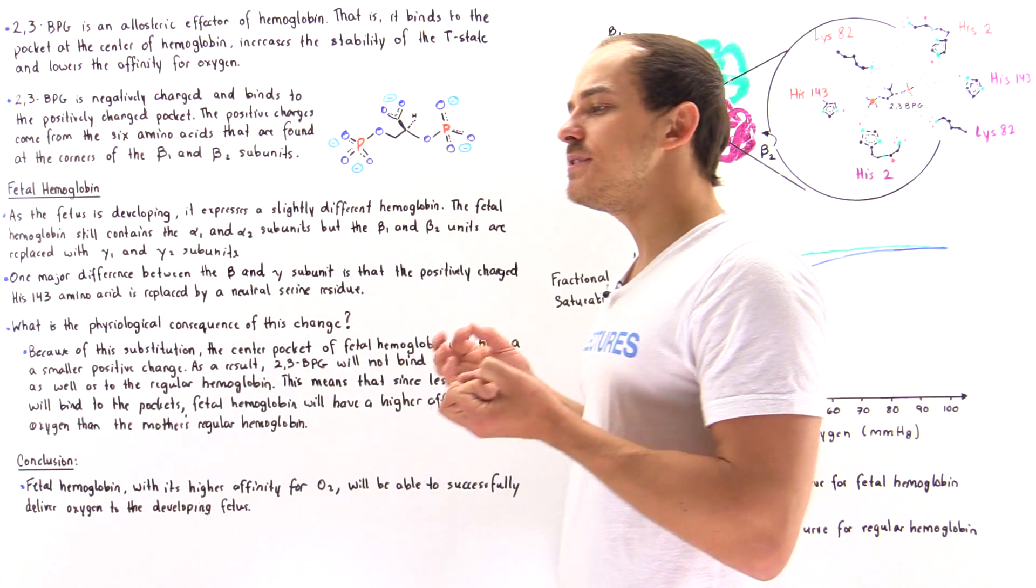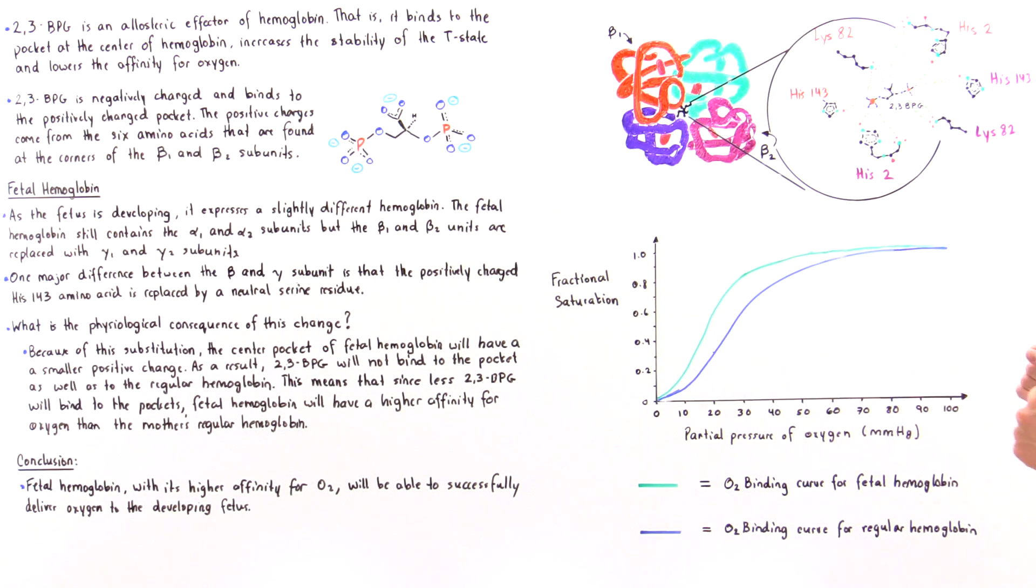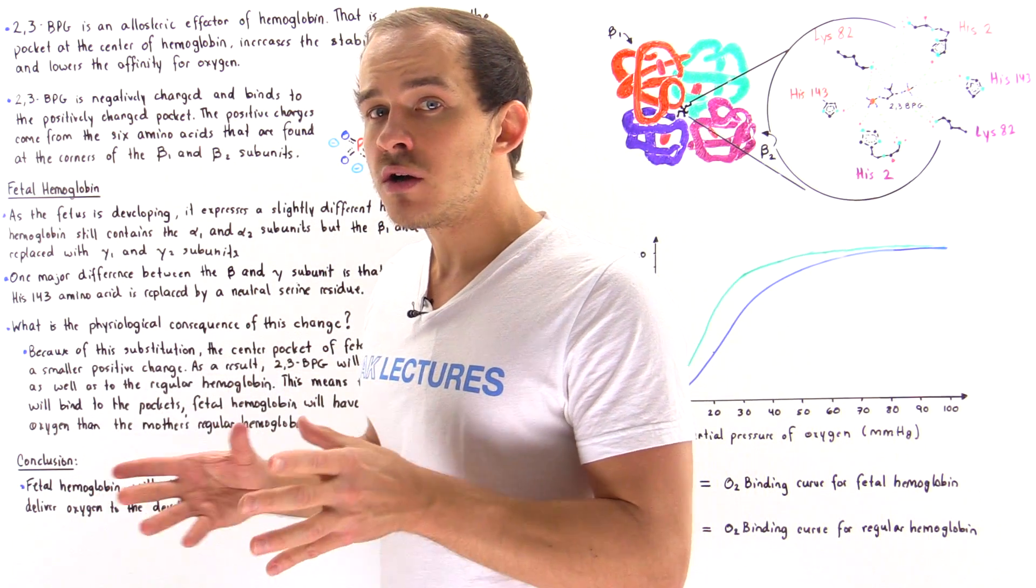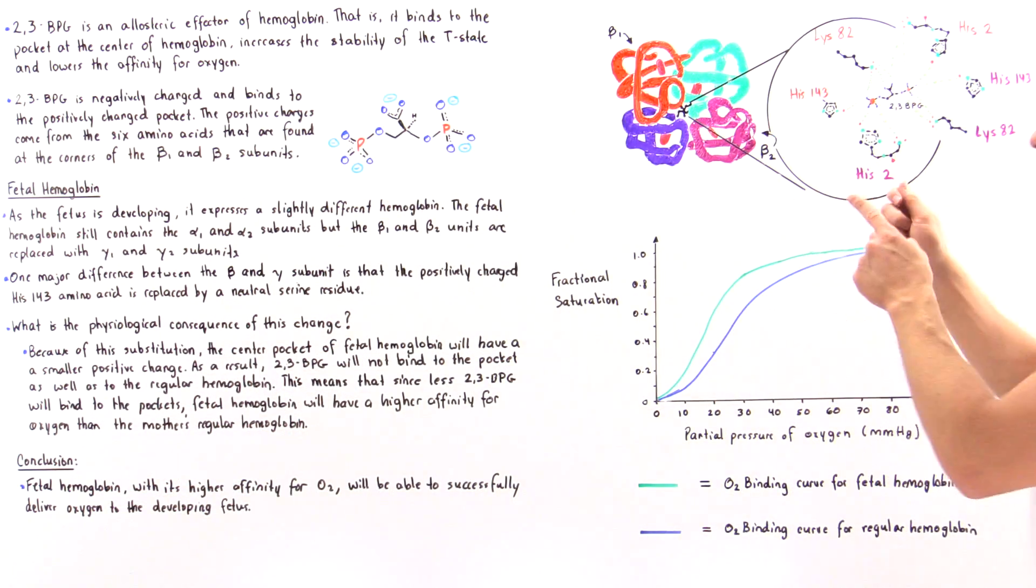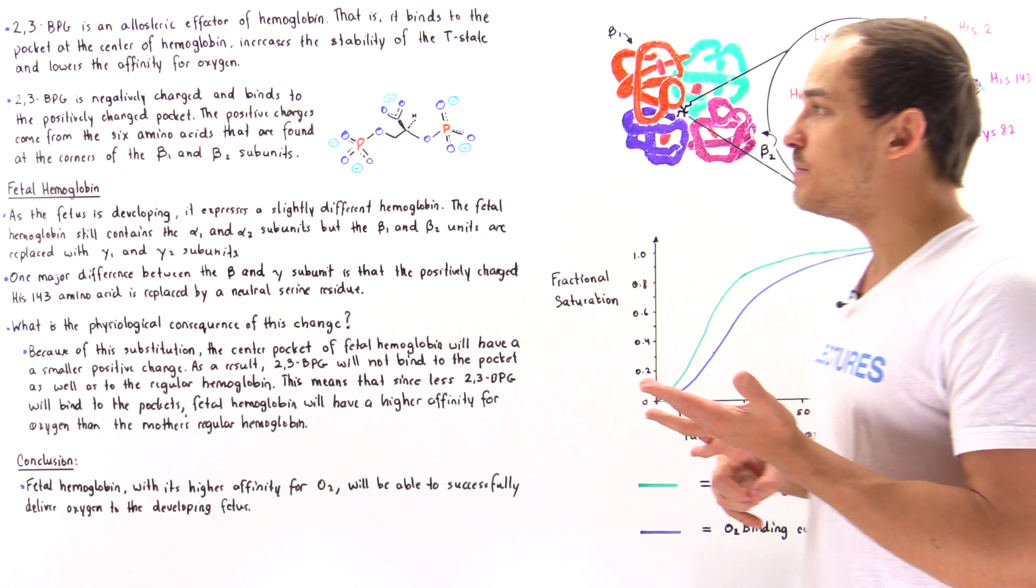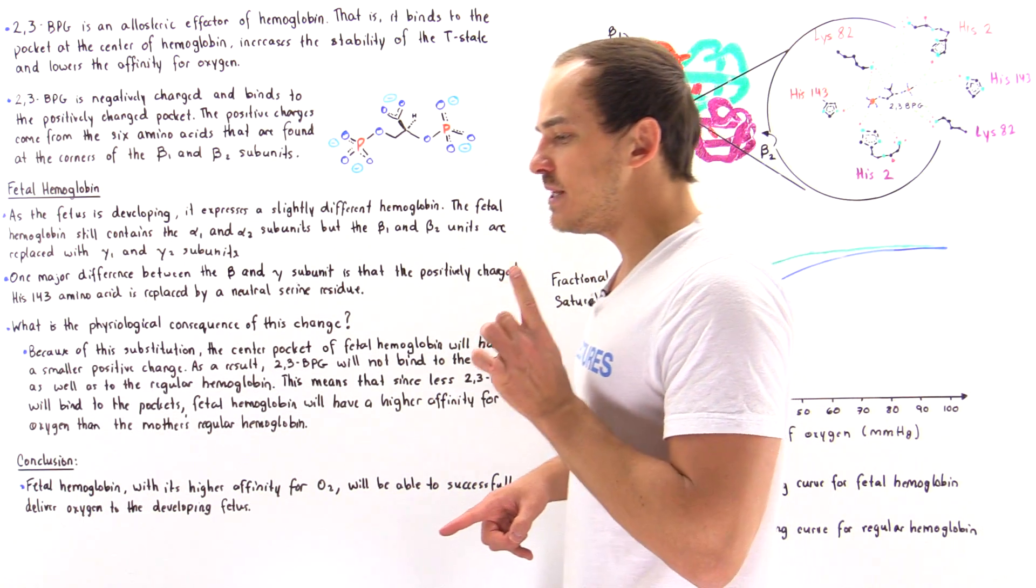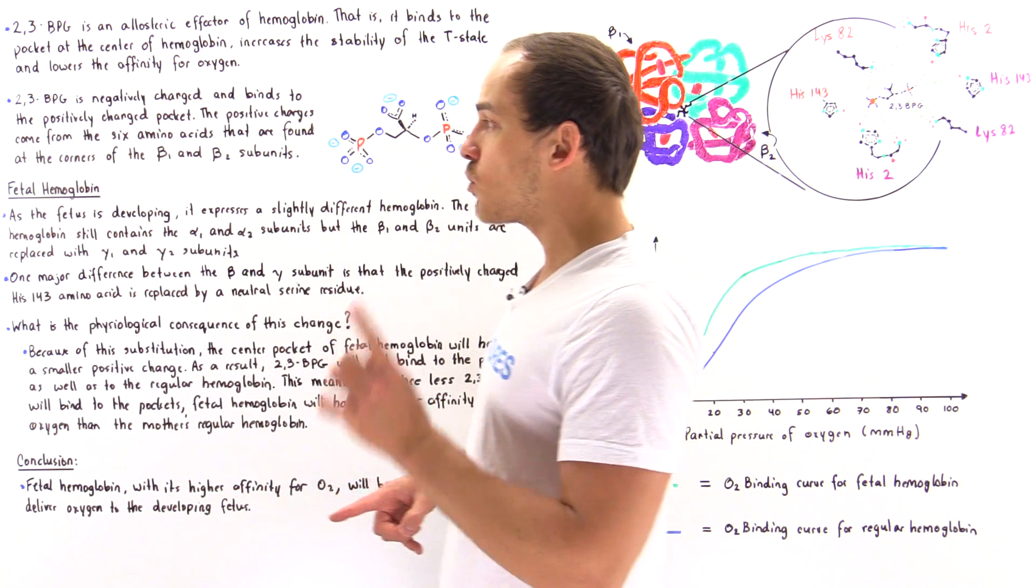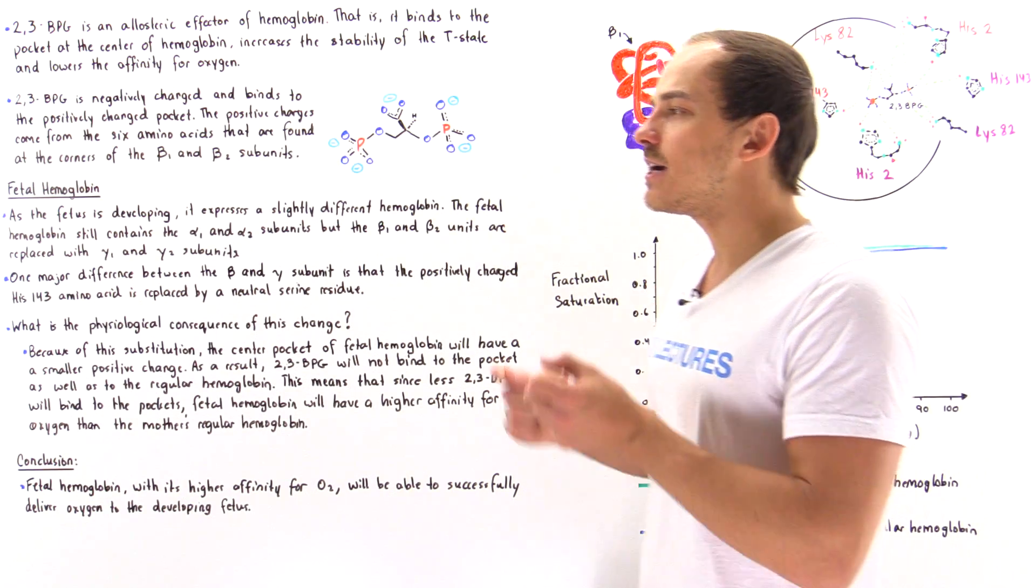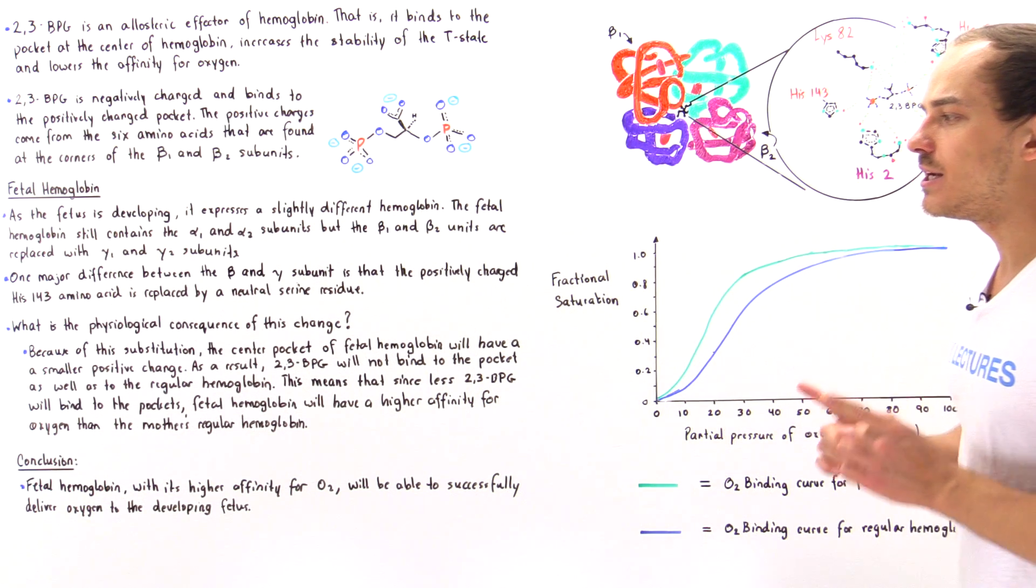What is the physiological consequence of that? Because we have a smaller positive charge, the 2,3-BPG will not be able to bind as strongly to that center pocket as it binds in normal hemoglobin. So the fetal hemoglobin will not bind the 2,3-BPG as strongly. Because of that, the fetal hemoglobin will have a higher affinity for oxygen than the normal hemoglobin found inside the blood of the mother.